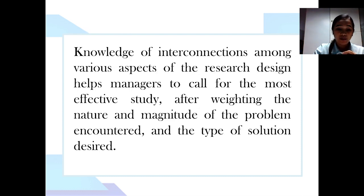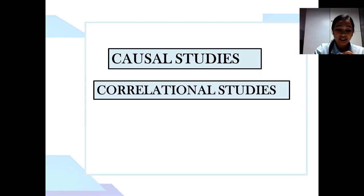Knowledge of interconnections among various aspects of the research design helps managers to call for the most effective study. One of the main advantages in fully understanding the difference between causal and correlational studies is that managers do not fall into the trap of making implicit causal assumptions when two variables are only associated with each other. They realize that A could cause B, or B could cause A, or both A and B could co-vary because of some third variable.